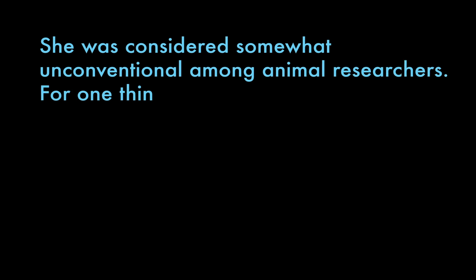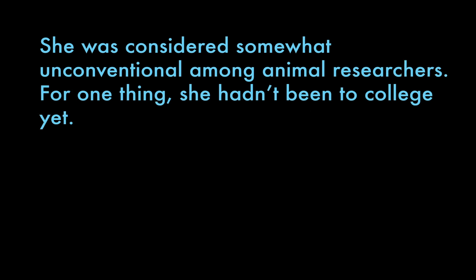She was considered somewhat unconventional among animal researchers. For one thing, she hadn't been to college yet. So this is very similar to that initial sentence, except for the transition phrase, for one thing, which is a way to set up examples.